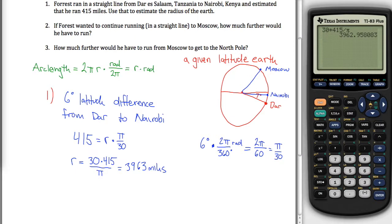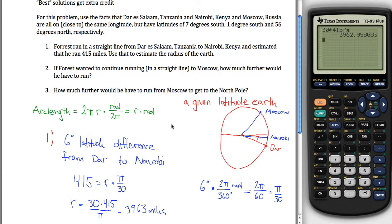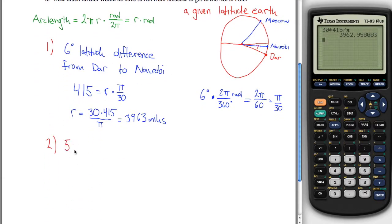All right, number 2 kind of says, now that you know the radius of the earth, you can use that and figure out what the arc length is from Nairobi to Moscow. Let's see, so how many degrees, first of all, from Nairobi to Moscow? Well, Moscow is 56 degrees, and Nairobi is one south, so it's a total of 57 degrees, 57 degrees latitude difference from Nairobi.